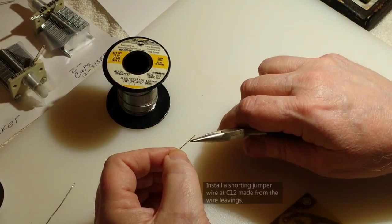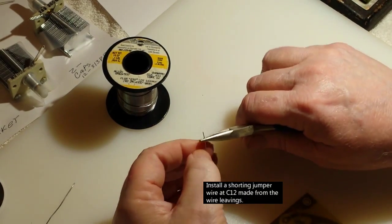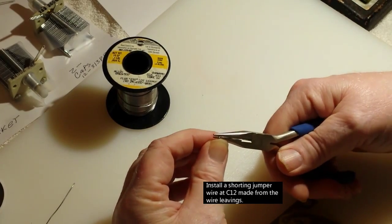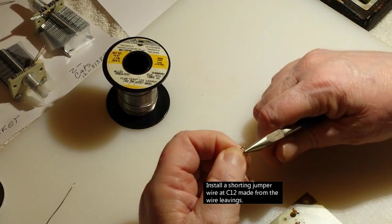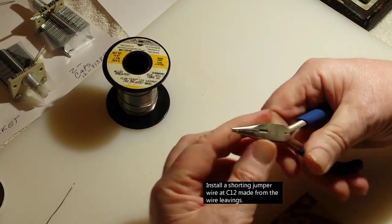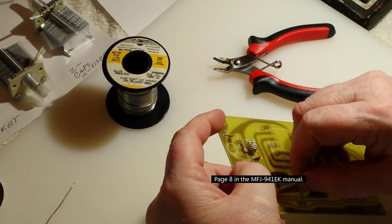Here they want you to take and put a jumper across where C12 is in the circuit board. They don't install an actual component C12. They put this jumper in there because this circuit board is used on several different antenna tuners.